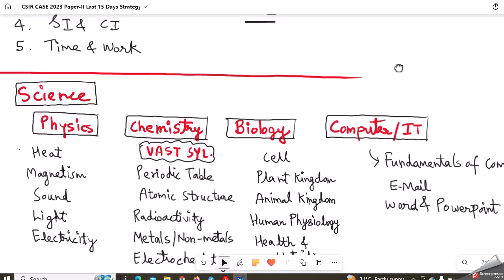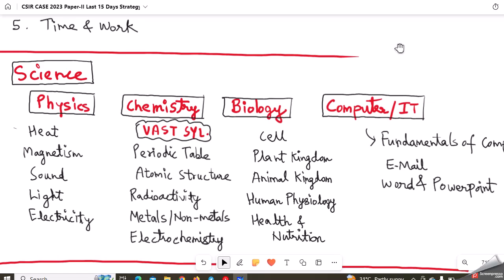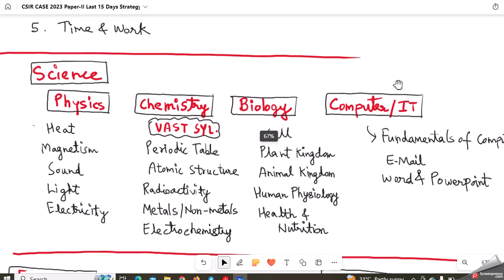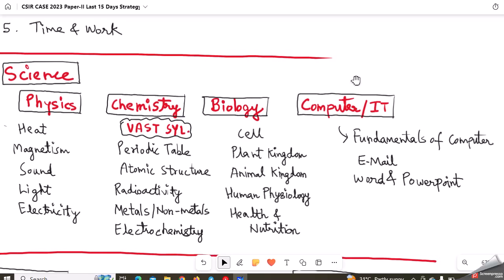Remember, you have to attempt these 50 questions in less than 40 minutes - that should be your target. Coming to Science, we have a total of four components: physics, chemistry, biology, computer and IT. In physics, the chapters listed are very straightforward. Just use your Lucent GK book, complete the topics and solve some mock papers.